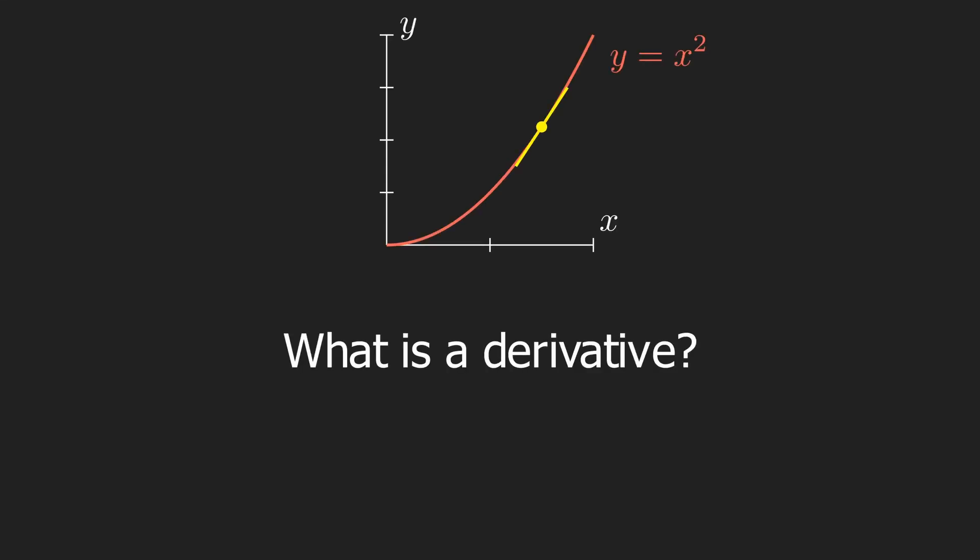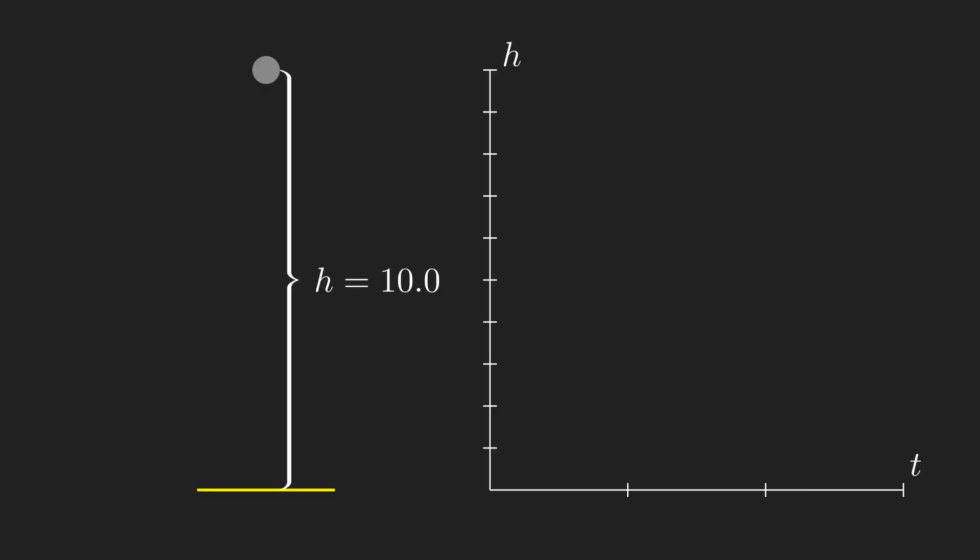So what does it actually mean to take the derivative? To begin to answer this, let's start by considering the path of a ball dropped to earth, 10 meters off the ground. We'll graph the fall of the ball as it drops.